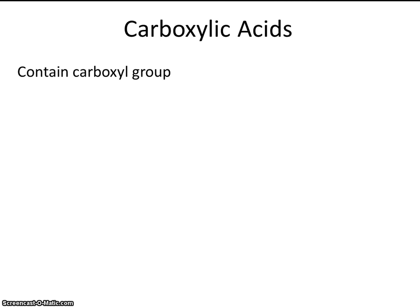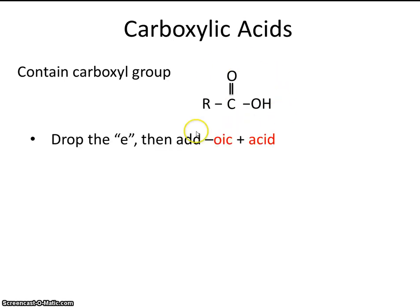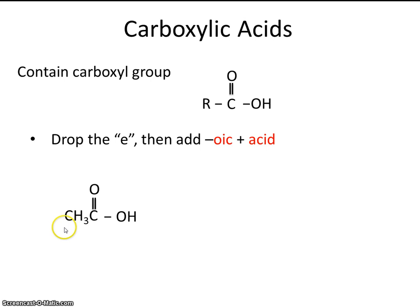Carboxylic acids contain carbonyl groups — you've probably seen the carboxyl group in biology before. To name them, drop the 'e' in the alkane name, then add the suffix '-oic acid.' For example, this molecule has two carbons — including the carbon doubly bonded to the oxygen. Two carbons is ethane, so we drop the 'e' and add '-oic acid,' giving us ethanoic acid. It also goes by common names: acetic acid, or you might know it as vinegar.